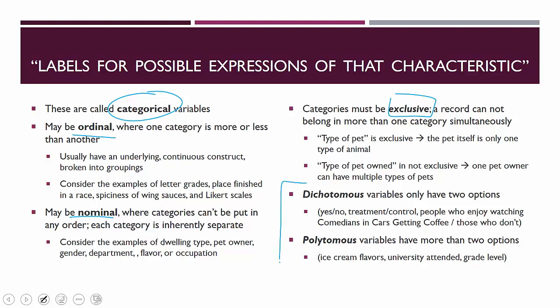When we record those categories, there are really two different ways that we can call the arrangement. They can either be dichotomous variables, in which there are only two options — very frequently yes/no, or sometimes just two groups like treatment versus control. You define a group and then everything else is in the other group. Regardless, a dichotomous variable only has two options.